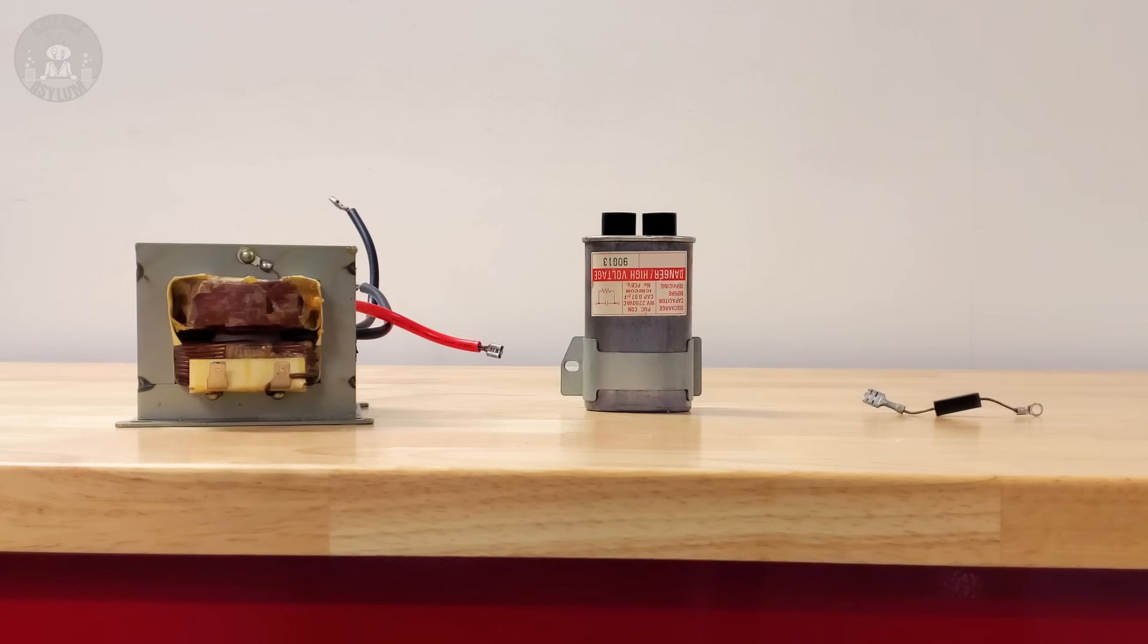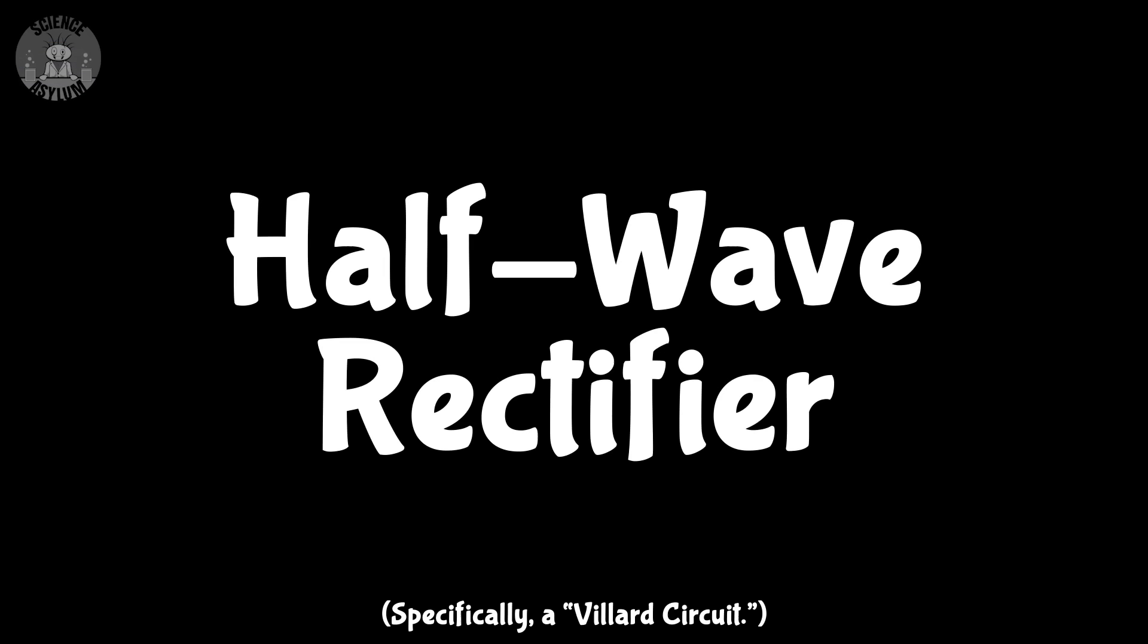This power supply design only has three components: a transformer, a capacitor and a diode. Seriously, that's it. This combination of components has a special name. It's called a half-wave rectifier, but I suppose not all of you are familiar with this terminology.